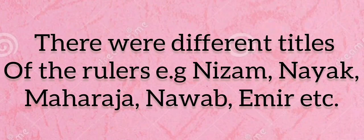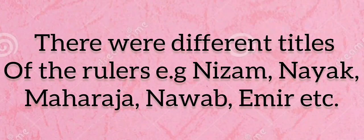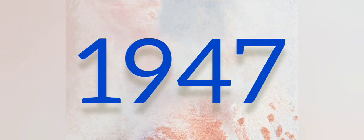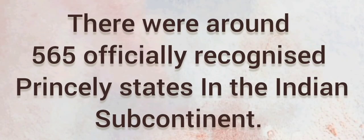There were very many princely states, and the rulers had different titles. In some places the ruler was called Maharaja, in others Sultan, Nawab, Nizam, or Nayak — these were native rulers of native states. When we look at 1947, we see that there were around 565 princely states in India.